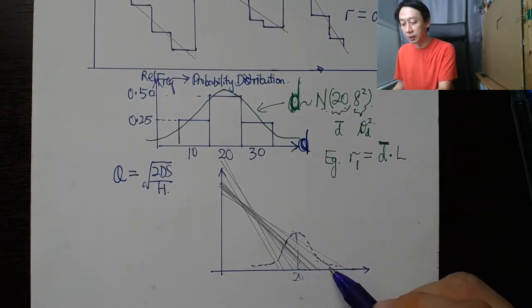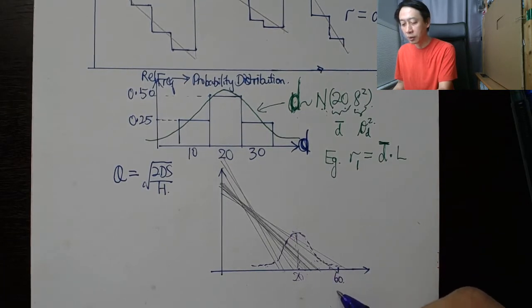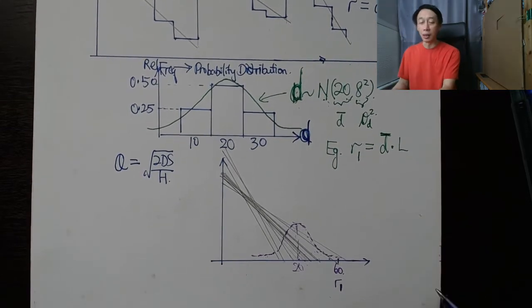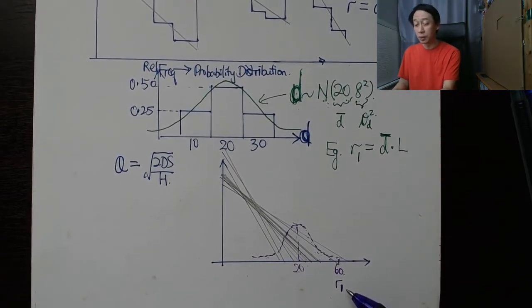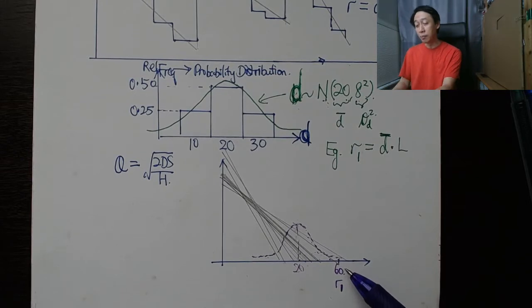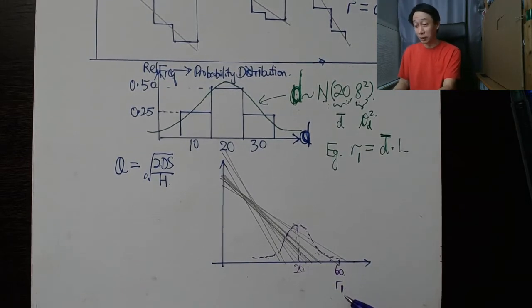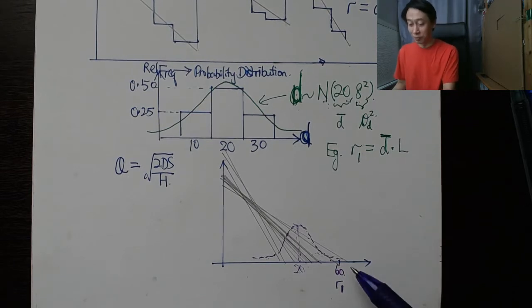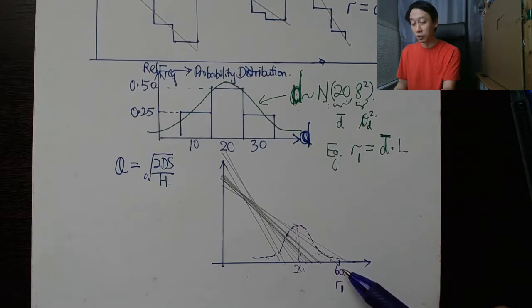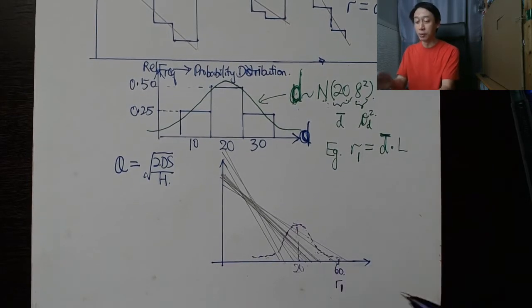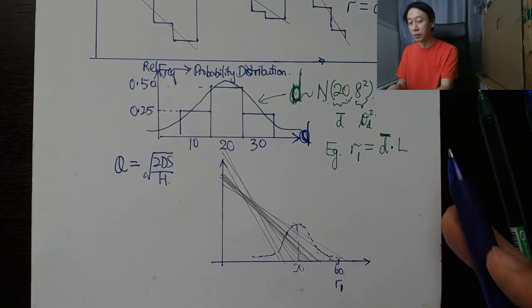We get something like 60 here, 40-60. So if our r1, our first cut at estimating the reorder point, is set to d̄ times L, it might mean we start reordering very early because seldom do we get our demand stretching beyond 60 in our example.